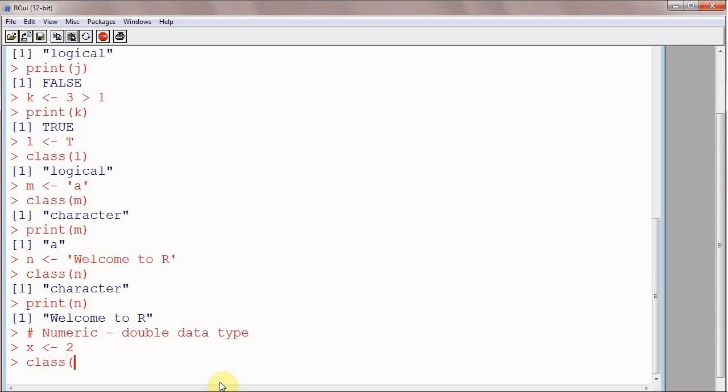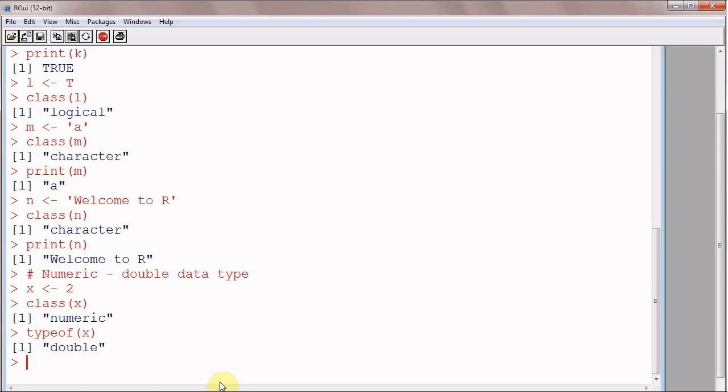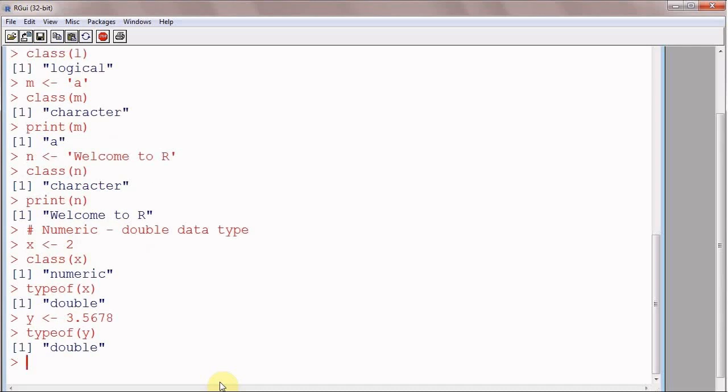X is assigned 2, and class of X is numeric, and type of X is double. So, double is numeric of course. Y is assigned a number with decimal, 3.5678, and type of this is double, type of Y is double.